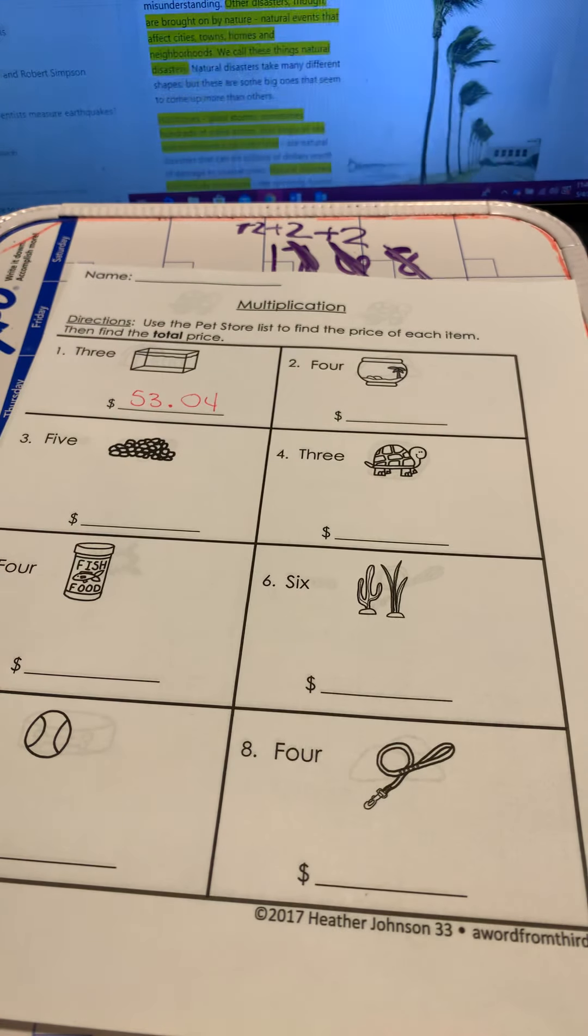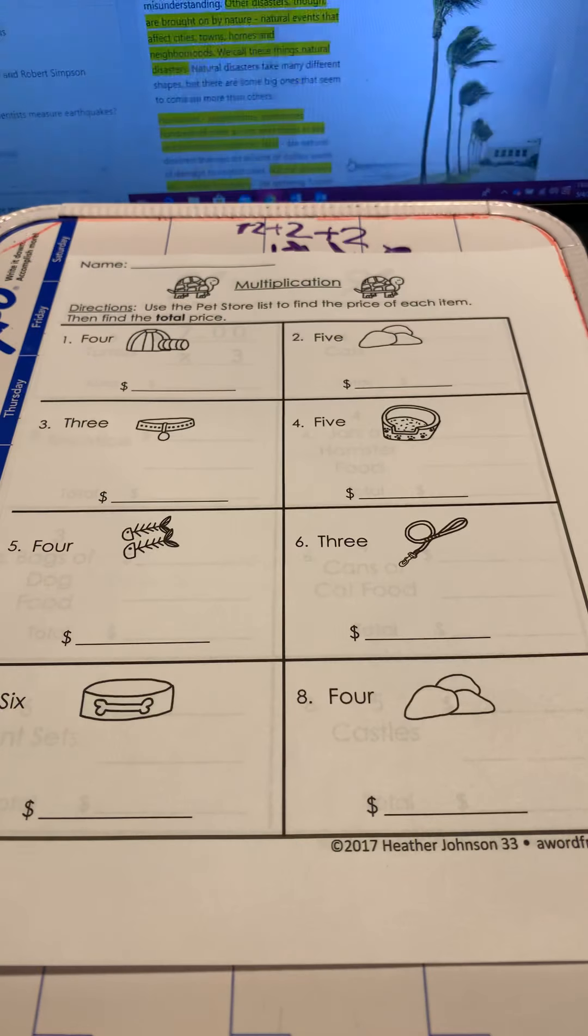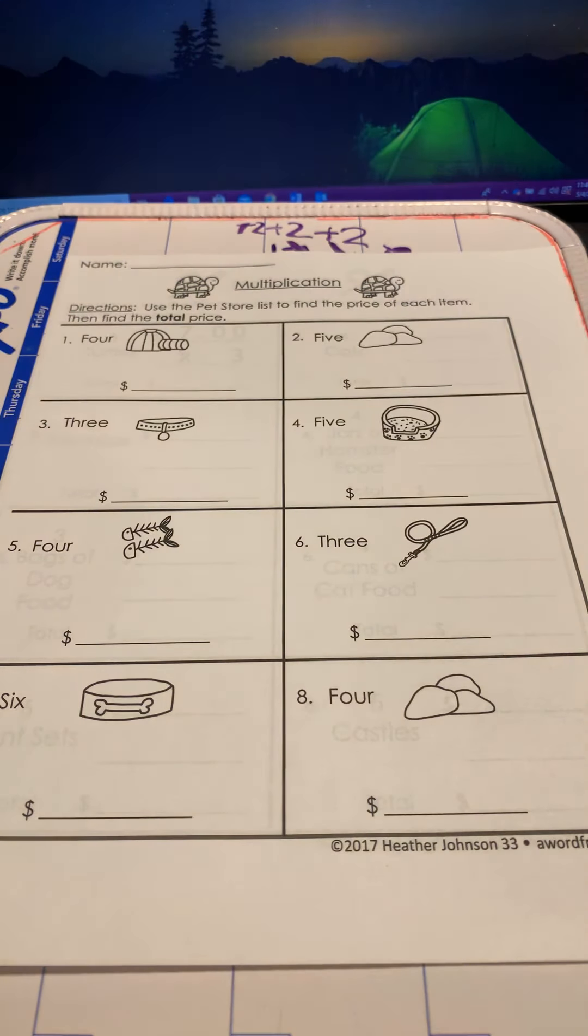And then your second page is the exact same thing. It just gives you a picture of something, and then you have to multiply. Scrap piece of paper is going to be your best friend. I mean, you can do the work on the side, but you don't have to. I would prefer you doing a scrap piece of paper.